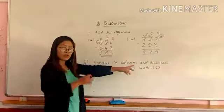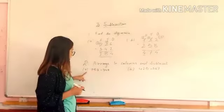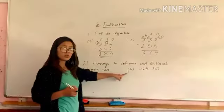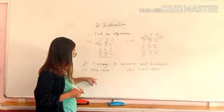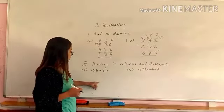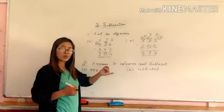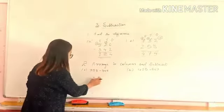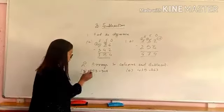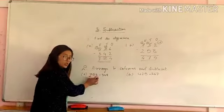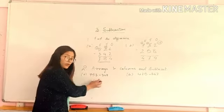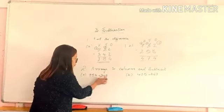Arrange in columns and subtract. Here what we have to do, question is given here. I have written two questions. First, you have to arrange in columns like this. You have to arrange after that, you will subtract. Always remember in subtraction, greater digit you have to write down first.